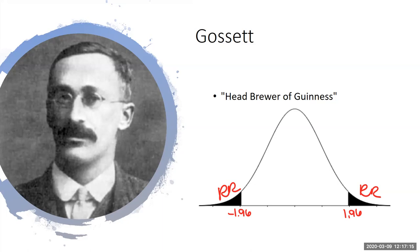Guinness did not want to put out bad beer. So Gossett's role was to test the batches: if a batch came out too high or too low, he'd say stop everything and figure out what's wrong. Anything in between those two markers he would deem okay. Guinness actually had a much smaller range of normality because they didn't want that variability.